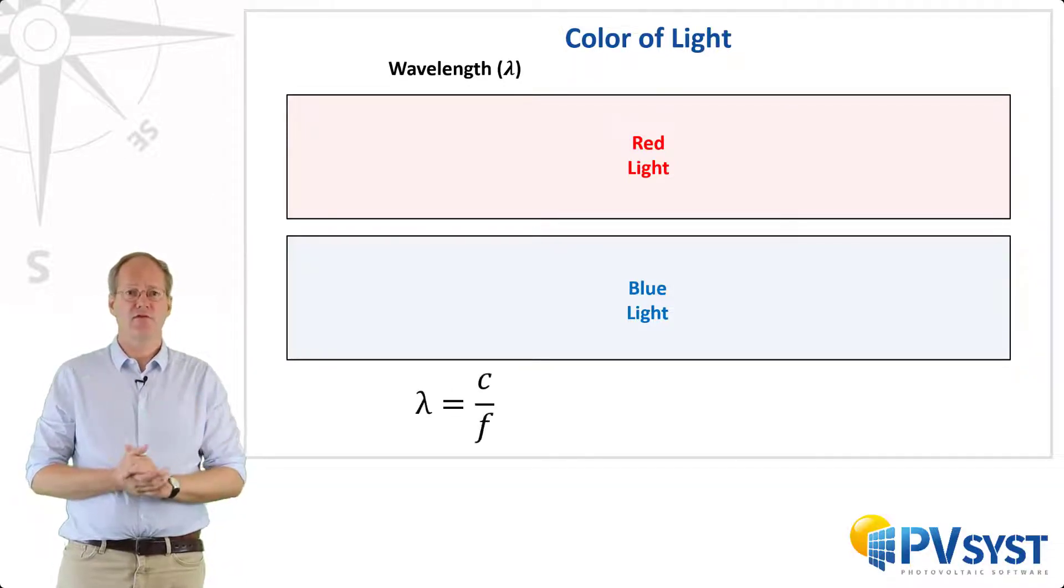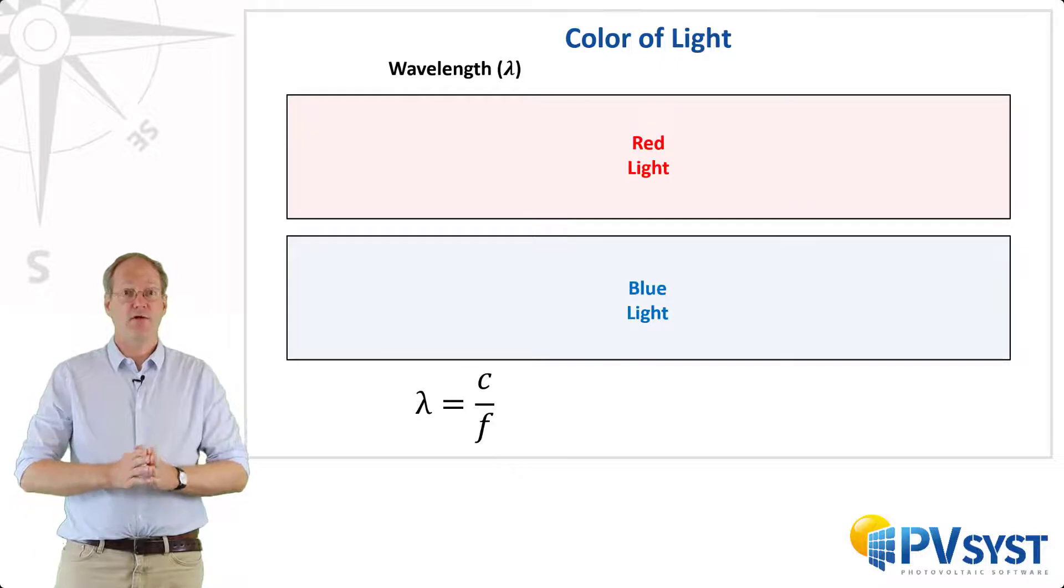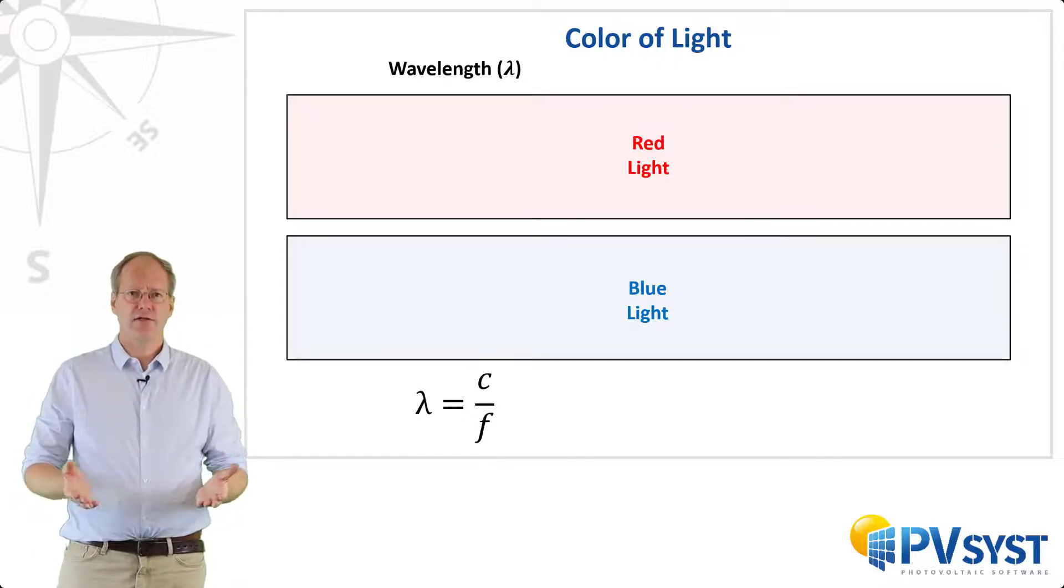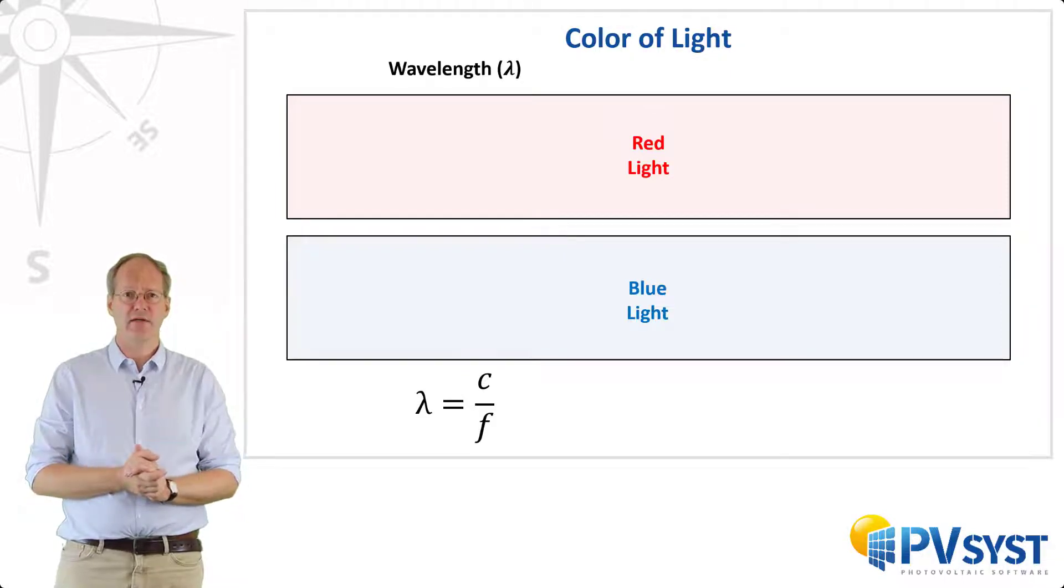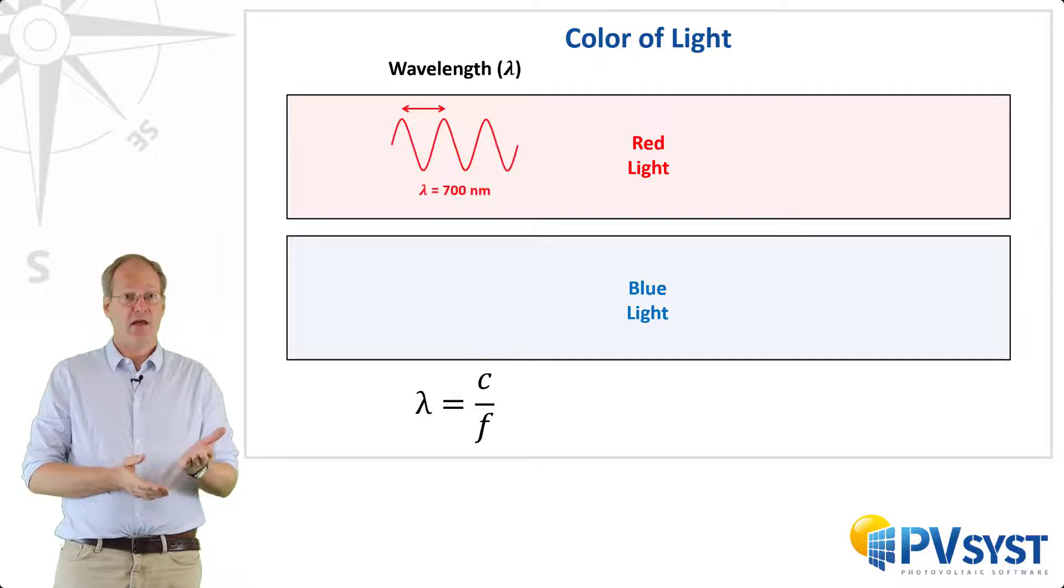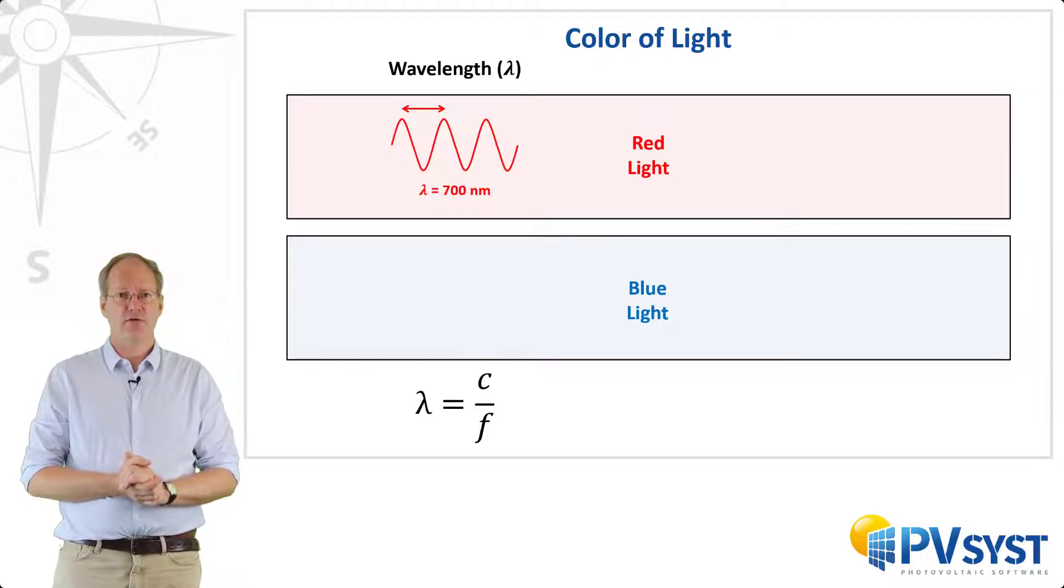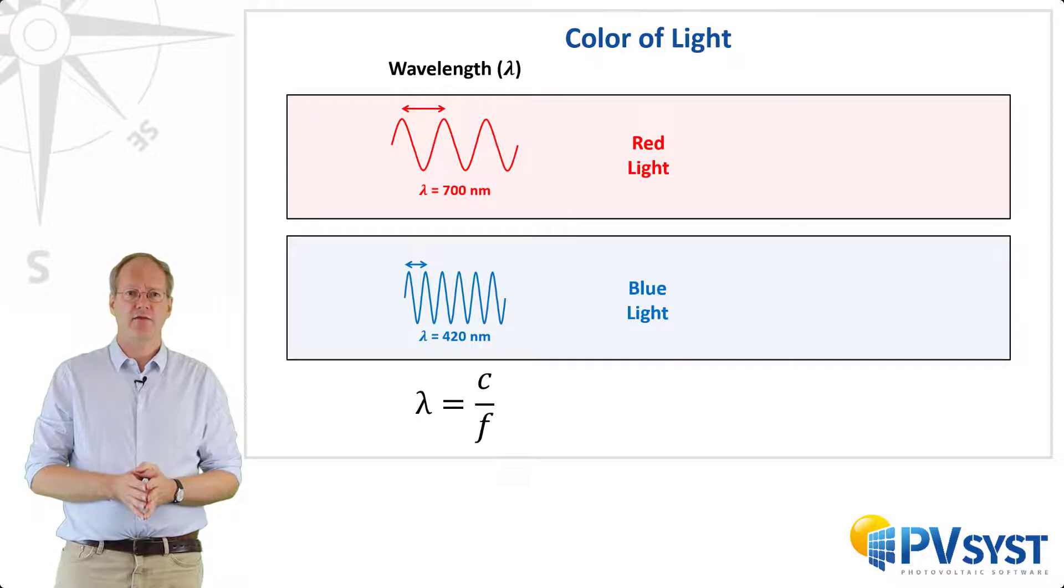The wavelength is equal to the speed of light divided by the frequency. So in principle, you could use either frequency or wavelength to describe a light wave. However, in photovoltaics we typically use wavelength, which is designated by the Greek letter lambda. We typically use the unit of nanometers when talking about the wavelength of light. Red light has a wavelength around 700 nanometers, while blue light has a much shorter wavelength of around 420 nanometers.